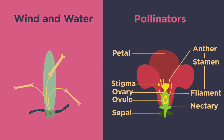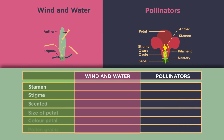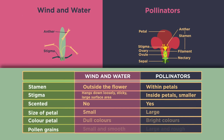Flowers pollinated by pollinators are structurally different from those pollinated by wind or water. Look at the differences in size, scent, and color of the petals, and the positioning of the stamen and style. Here are some key differences. Why do you think they are different?